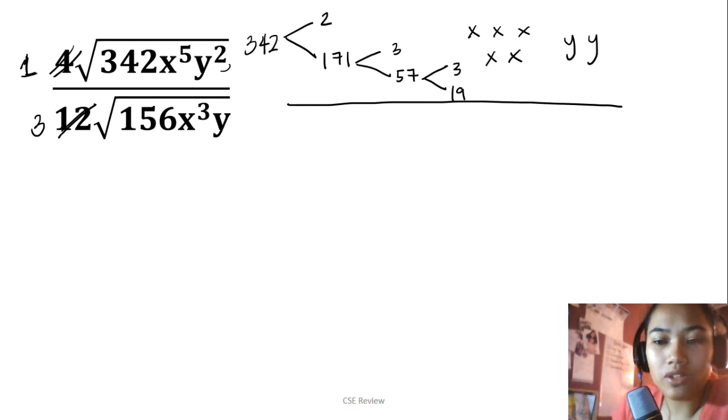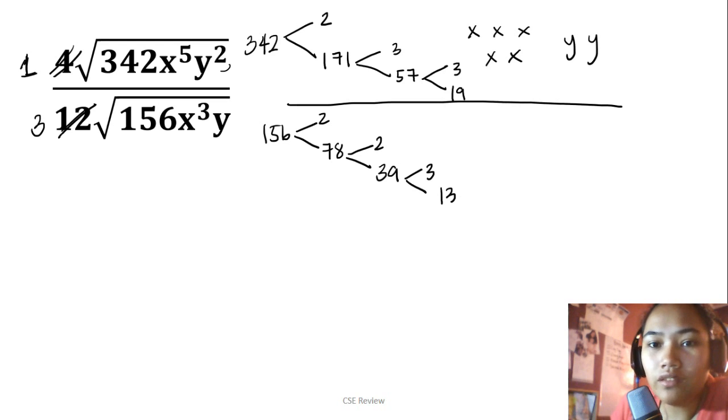I like starting with the one on the bottom first, so I can cancel what's inside. On the bottom, you have 156. 156 can be divided by 2, giving 78. After that, divide by 2 again, giving 39. Then 39 can be divided by 3, giving 13. For 13, we can't factor it further because its only factors are 13 and 1, so we stop there.